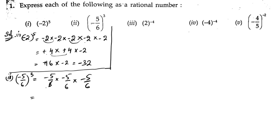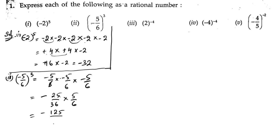Minus into minus is plus, plus into minus is minus. 5 fives are 25, 6 sixes are 36. Into 5 by 6: minus 25 into 5 is 125, by 36 into 6 is 216. So the answer is minus 125 by 216.